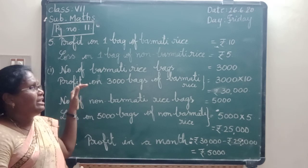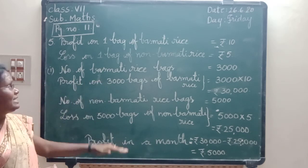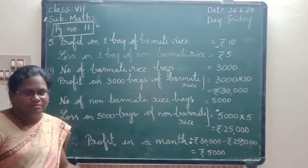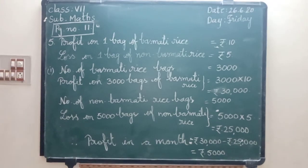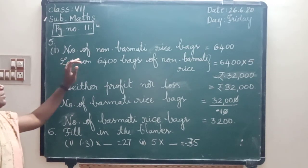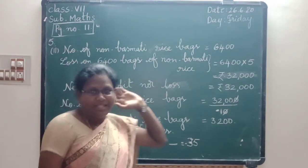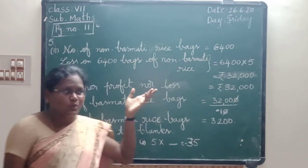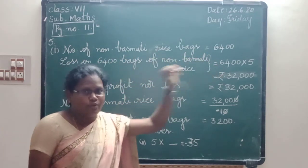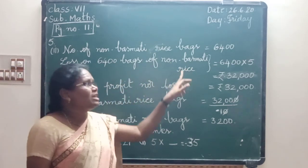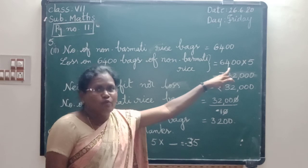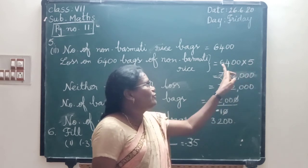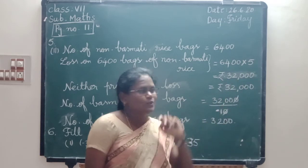There is a second sub-question. I will explain afterwards; now you are copying this sum. The second sub-question: they sold 6,400 bags of non-basmati rice. Number of non-basmati rice bags is 6,400. Loss on 6,400 bags of non-basmati rice: 6,400 into 5. 5 times 0 is 0, 5 times 0 is 0, 5 times 4 is 20 (carry 2), 5 times 6 is 30 plus 2 is 32. So loss is 32,000.